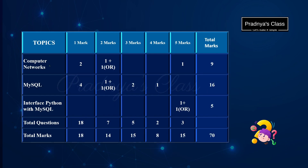The next topic is Computer Networks. You will be getting two questions for one mark and there are two questions for two marks with choice. Generally, we get one question for five marks which will be a case study based question. So the total weightage for this chapter is nine. This is also a topic with higher weightage, so you should have a solid foundation for scoring these marks.